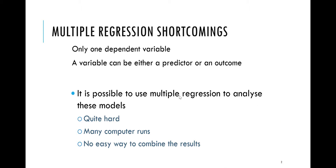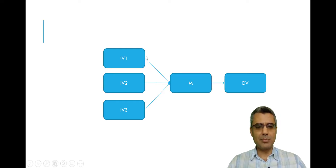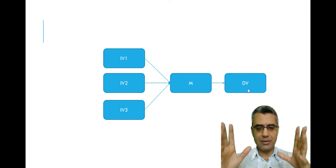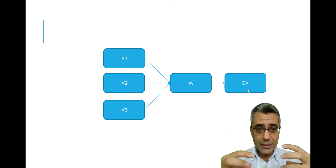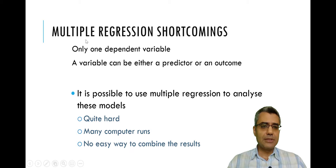You need to run the test several times, and this is not ideal in statistics because each test has its own Type 1 and Type 2 errors — so multiple tests mean more errors. For example, to test such a model you may split it into two sub-models, run them separately, and then combining those results is not easy. These are the shortcomings of multiple regression analysis.